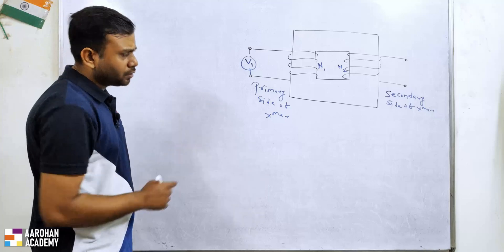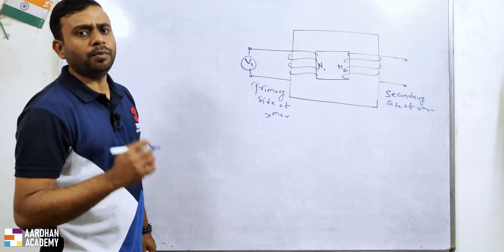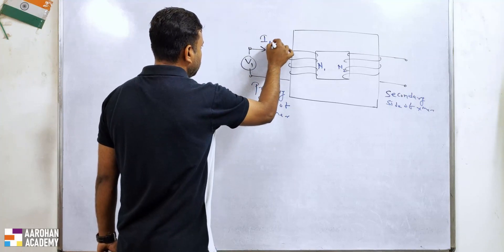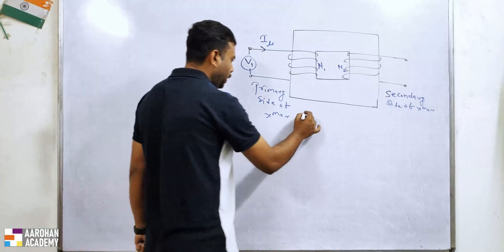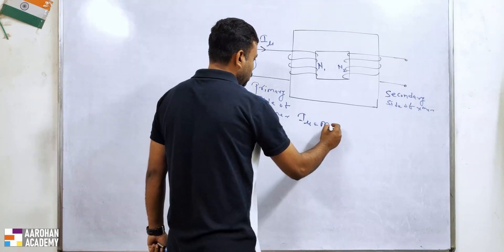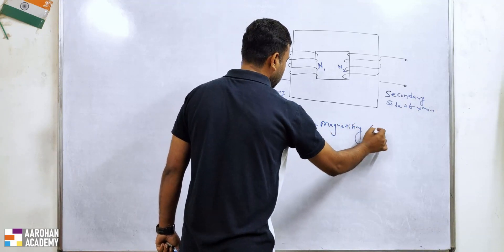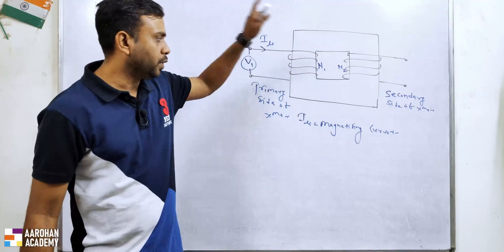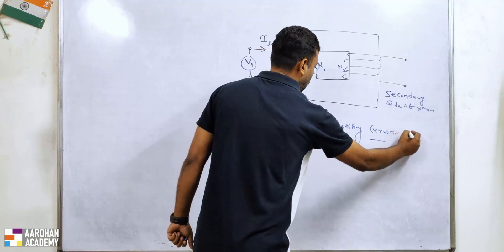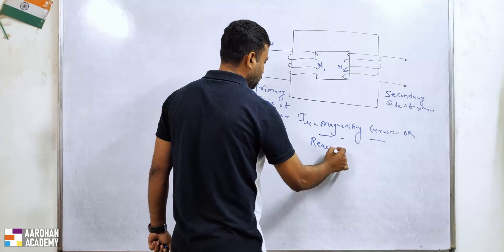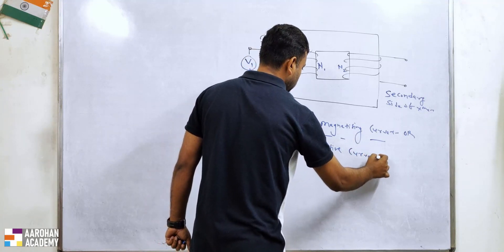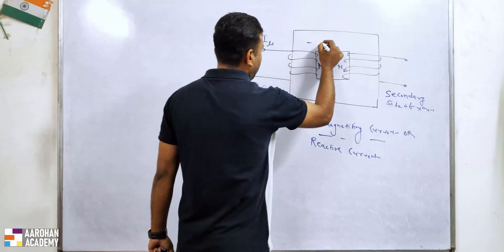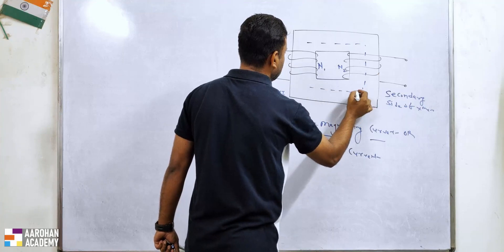Now, to produce the flux in this transformer core we have to give a sufficient amount of current which is able to produce the flux. This current is basically known as Imu — the magnetizing current. This magnetizing current is responsible for producing the flux in the transformer core. We can also call it the reactive current. Because of this magnetizing current, there will be flux set up in the transformer core.